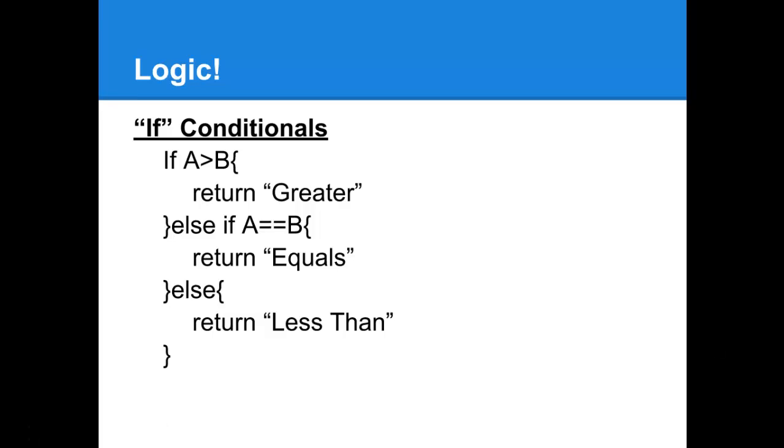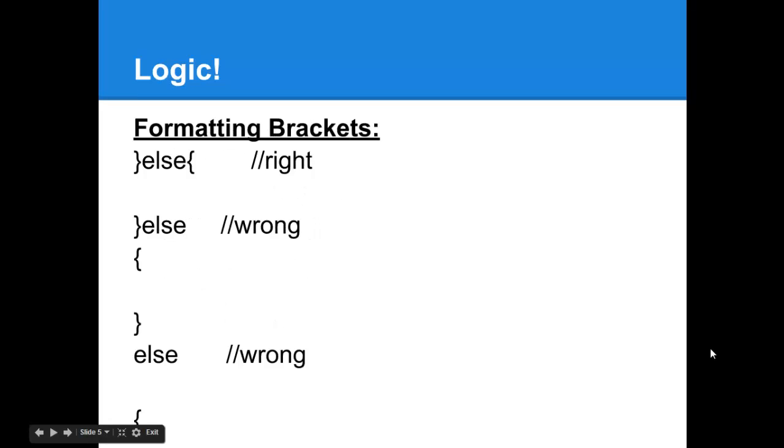If statements are also pretty straightforward. One of the unique aspects of Go, however, is that you don't have to stick the truth statement within parentheses. So as you can see here, it just says if a greater than b, not if parentheses a greater than b close parentheses.